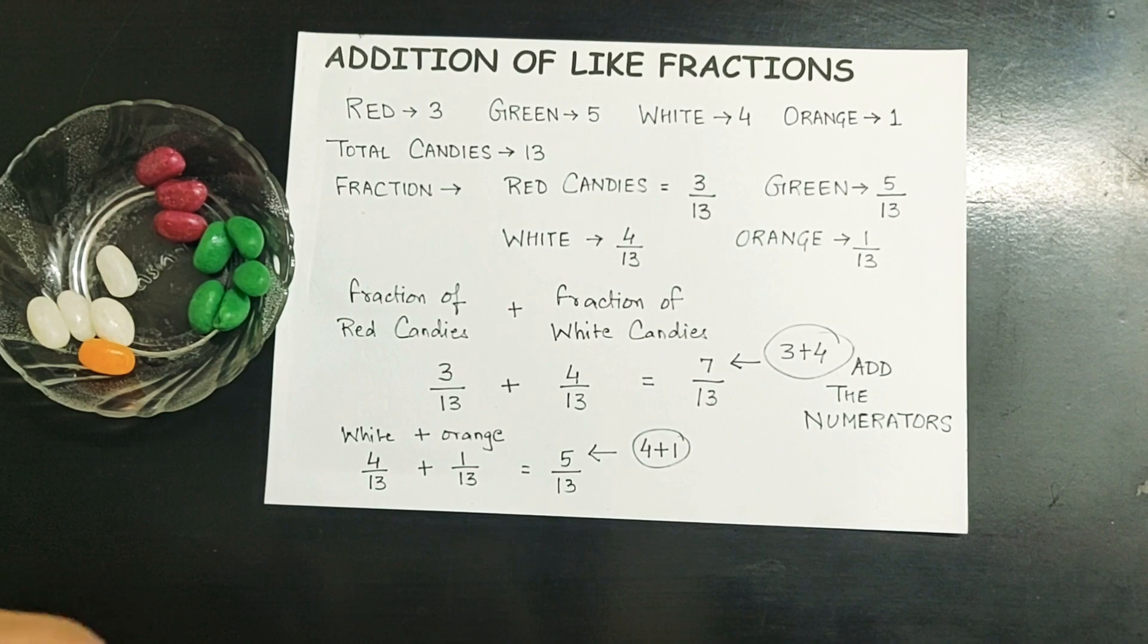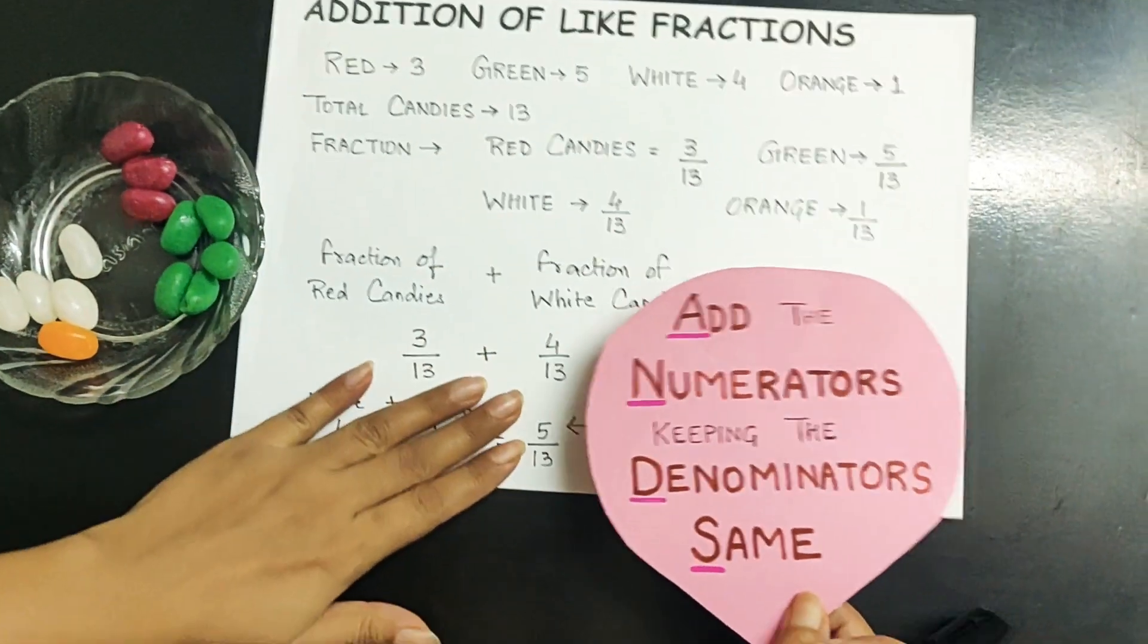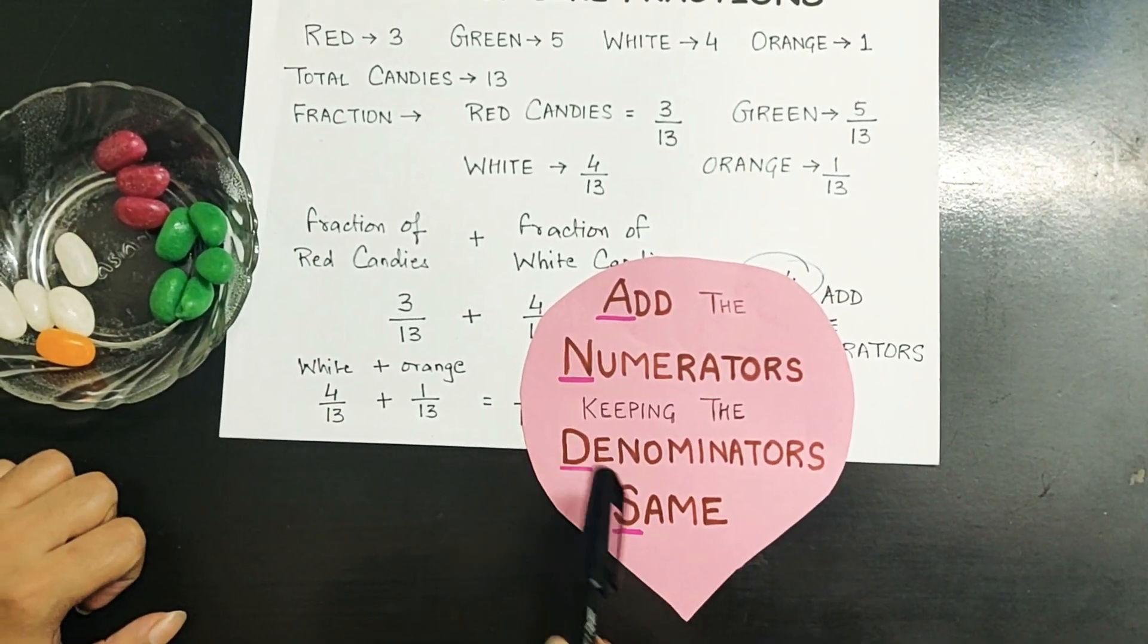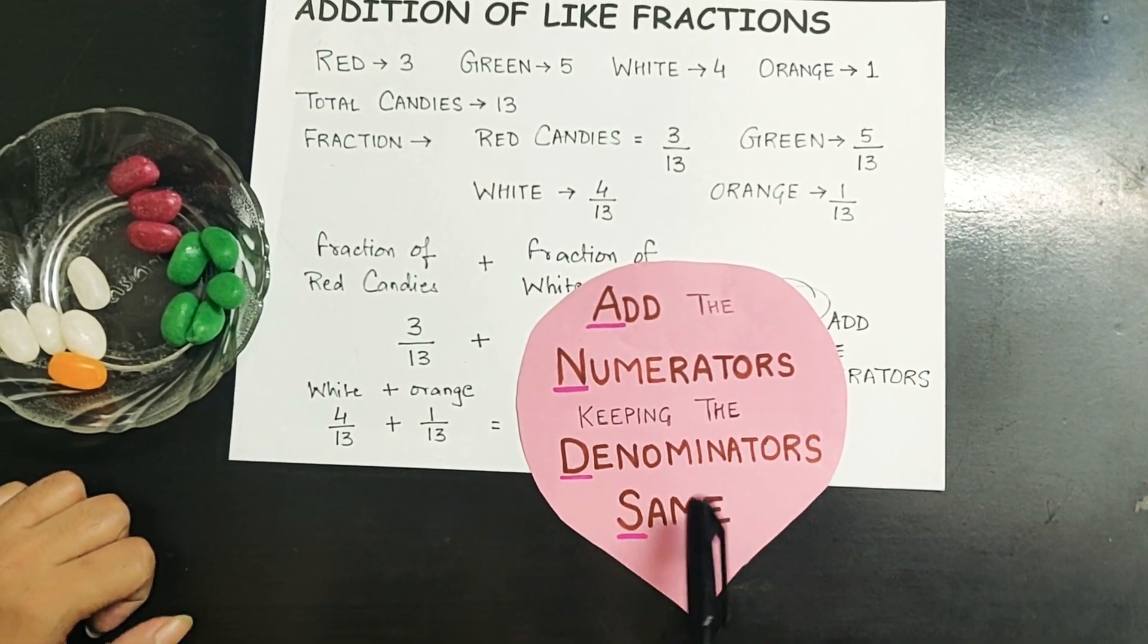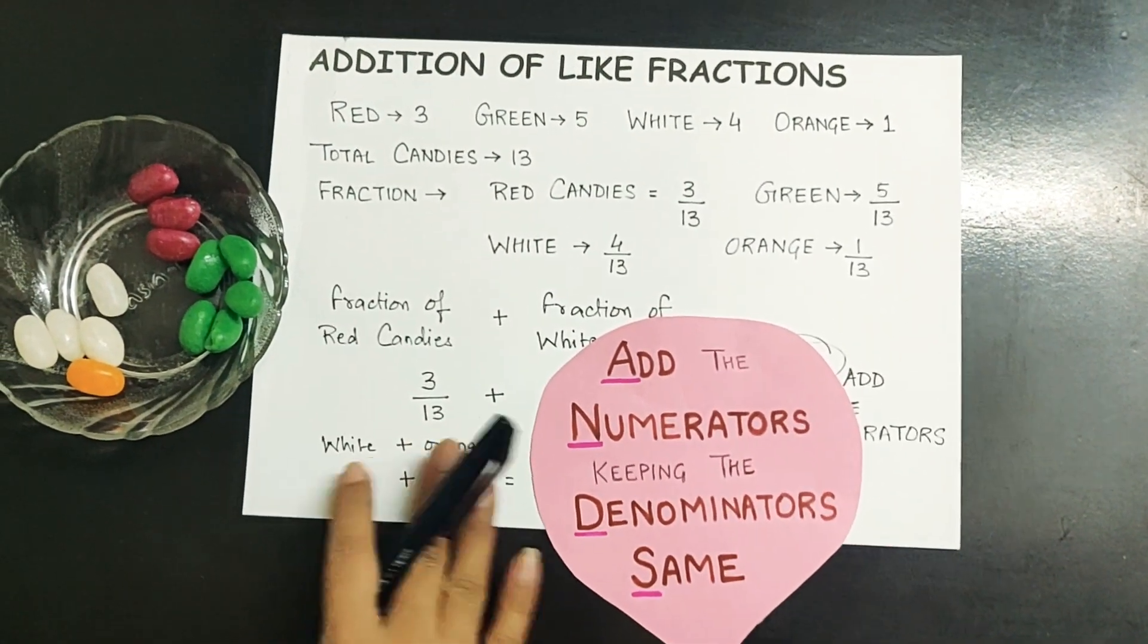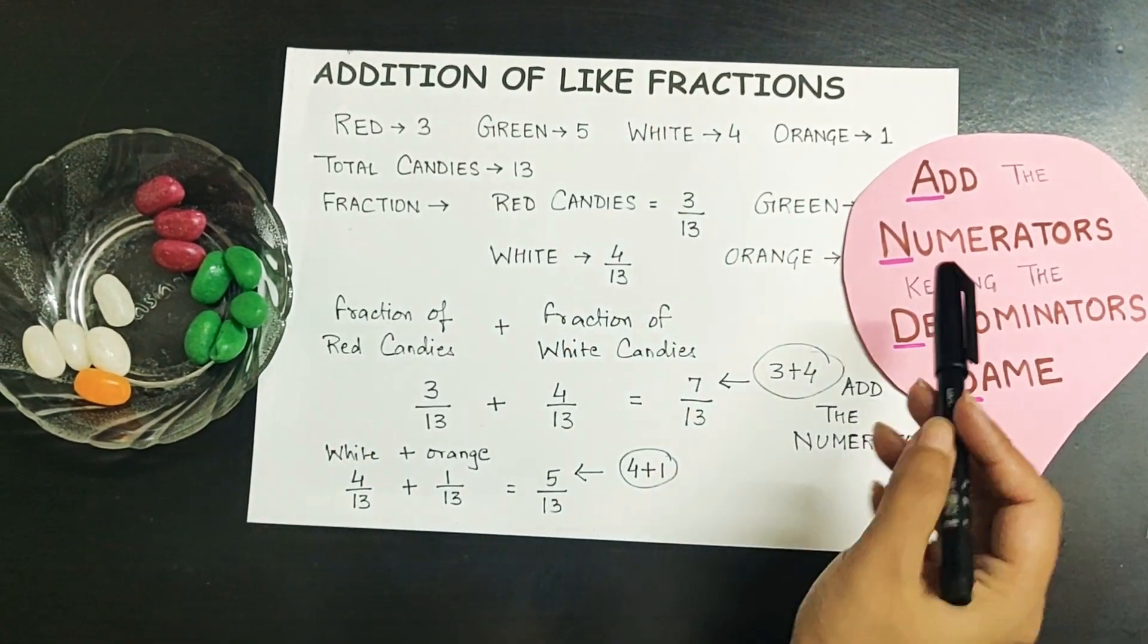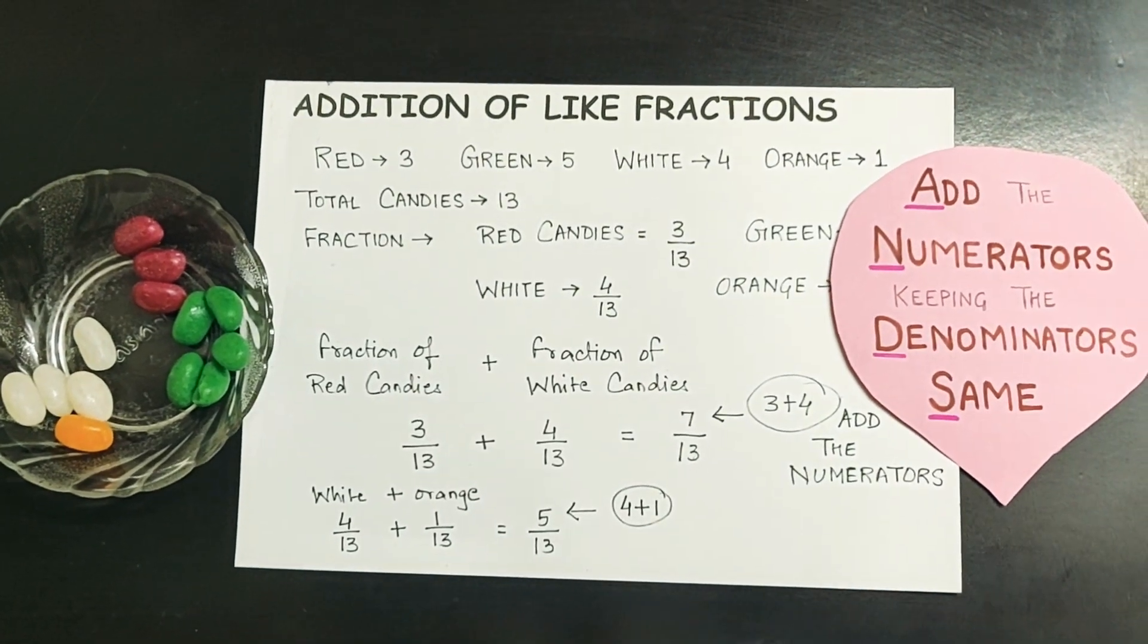You can think about it as the ANDs rule. A-N-D-S: Add Numerators, Denominators Same. So this becomes the rule for addition of like fractions. ANDs rule: add numerators, keeping the denominators same.